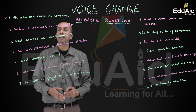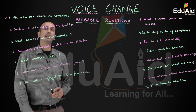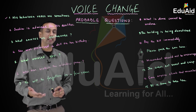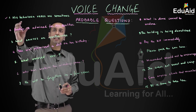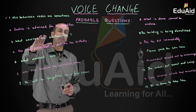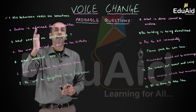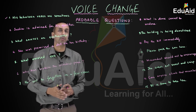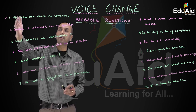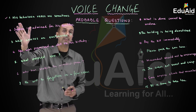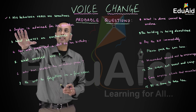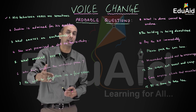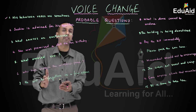Question number one: 'His behavior vexes me sometimes.' As discussed, while converting a sentence from active to passive or passive to active, be very careful about what type of sentence you are given. We need to understand whether the subject is the doer or the subject is acted upon — the recipient.